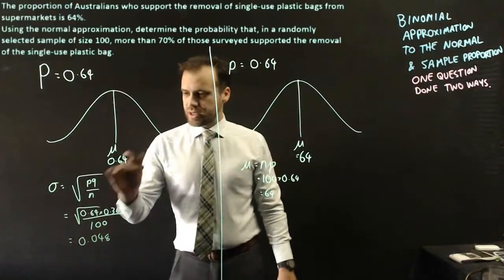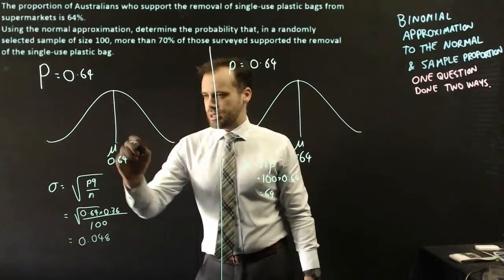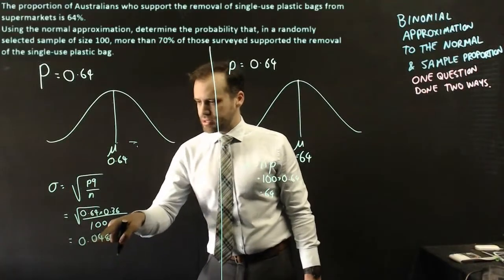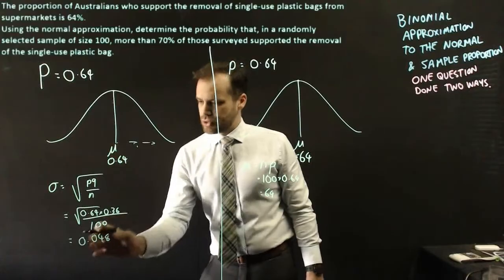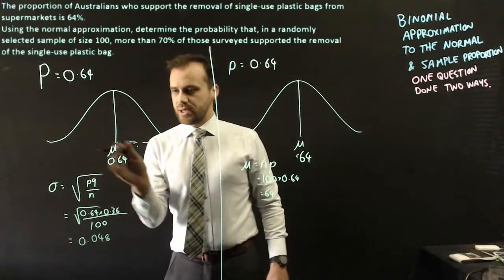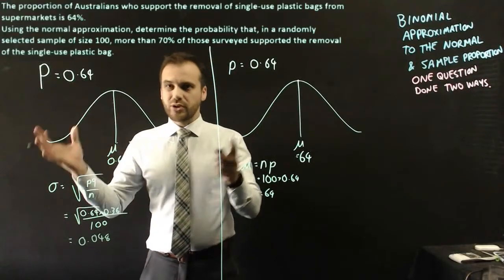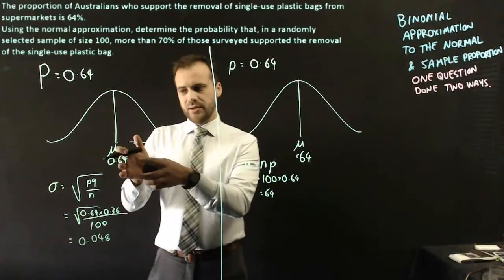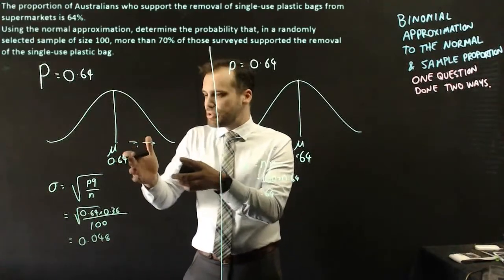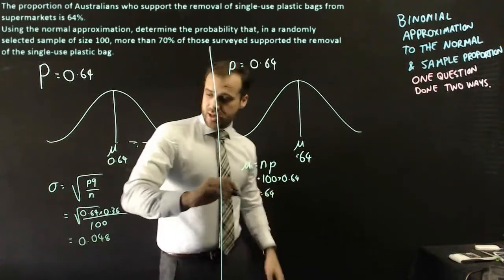That standard deviation tells us that one standard deviation away from here is going to be 0.64 plus 0.048. Then two standard deviations, we add two lots of that, and then three standard deviations, and the same here. You can see it's going to stretch, 99% of the proportions is going to split between like 0.82 and 0.5 something.